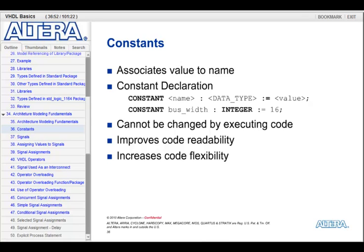Constants are used to assign a value to a name. They are used to make your code more readable and add flexibility to your design. By using constants, I can change things like bus widths or even enable or disable design features just by changing the value.